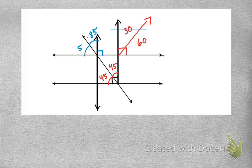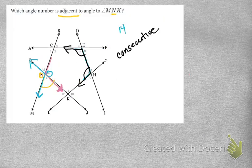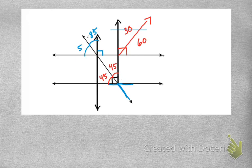Let's recap: supplementary angles equal 180 degrees; complementary angles equal 90 degrees; vertical angles are opposite each other and equal to each other; adjacent angles are next to each other, sharing one of their sides. These are the basics — the ones you're going to hear a lot and need most before working with angle relationships in geometry. I hope this helped you out. See you on the flip side — peace!